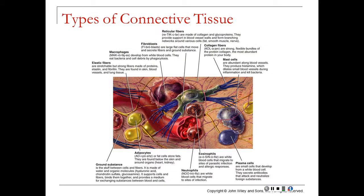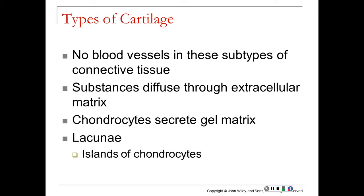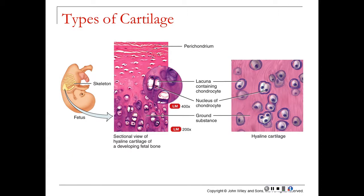A diagram shows the different types of cells and fibers found in connective tissue. Elastic fibers are long and stringy; collagen fibers are thick and bundled. Both give tissues stretch and flexibility. Cartilage typically has no blood vessels and is classified as avascular — substances diffuse through the extracellular matrix rather than through capillaries. Chondrocytes secrete a gel-like matrix and live within small compartments called lacunae, which literally look like little bubbles or nests housing a cell.